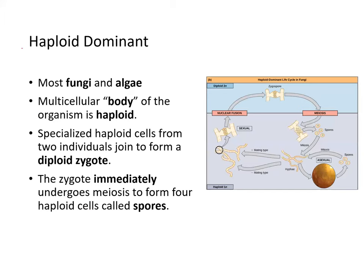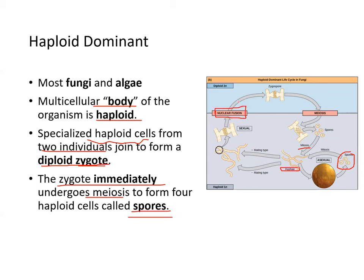For haploid-dominant organisms, most fungi and algae tend to be haploid-dominant. The multicellular body is haploid. Specialized haploid cells from two individuals can join to form a diploid zygote, but the zygote immediately undergoes meiosis to produce spores. Spores develop into structures called hypha, divided into plus and negative mating types, which combine through nuclear fusion to form the diploid zygote again.